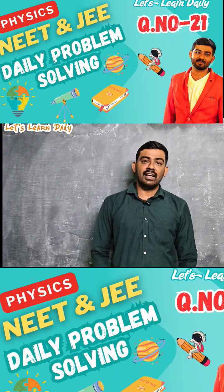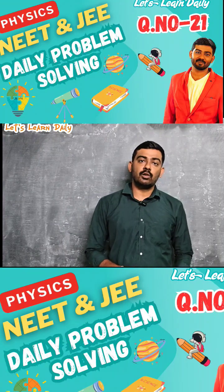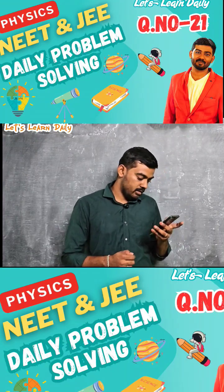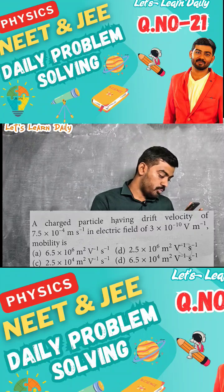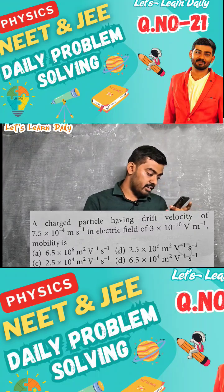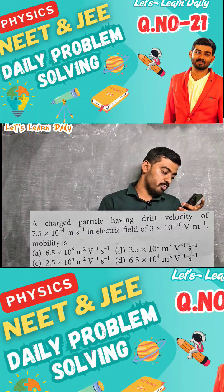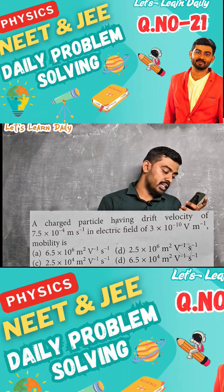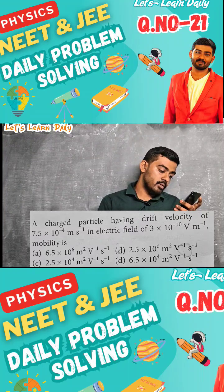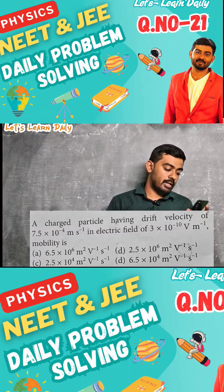Hi students, welcome to the NEET-JE problem. A charged particle having drift velocity of 7.5×10⁻⁴ meter per second in the electric field of 3×10⁻¹⁰ volt per meter. Mobility is to be found.